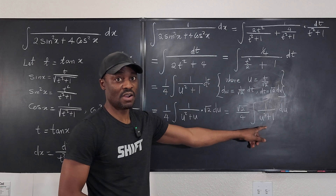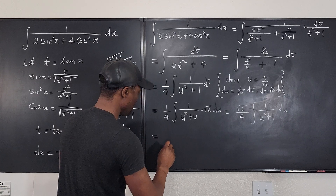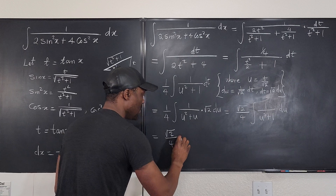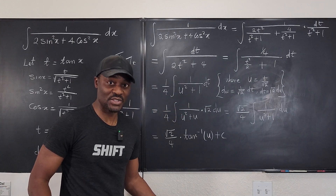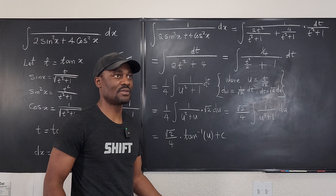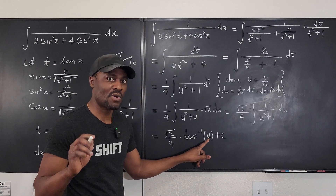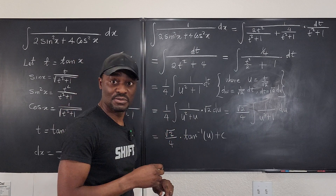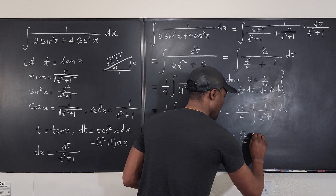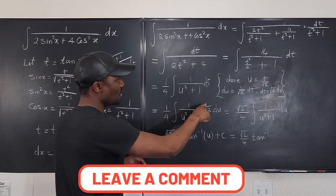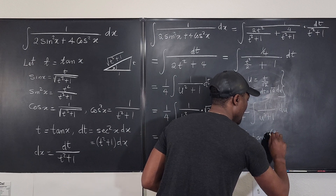We know this integral is arctan of u, so our answer is square root of 2 over 4 times arctan of u, plus C. Now we go back and substitute: u was t over square root of 2, giving square root of 2 over 4 times arctan(t/√2), plus C.